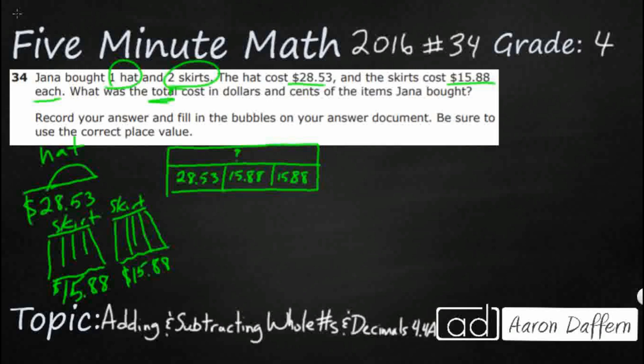And then finally, another way to represent this, if we really need to, would just be to put this into an equation. $28.53 plus $15.88 plus $15.88 is going to equal our, we'll call it T, our total cost.